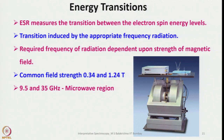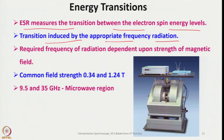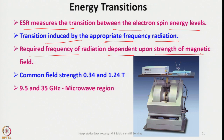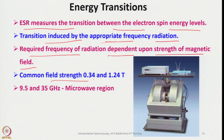ESR measures the transition between electron spin energy levels induced by appropriate frequency radiation. In the absence of a magnetic field, electron spins have zero energy; upon applying a field they align to ±½ states. The required frequency depends on the field strength — as field strength increases, the energy separation increases and higher frequency microwaves are needed. Common field strengths are 0.34 to 1.24 T, with 9.5 to 35 GHz microwave radiation in perpendicular mode.